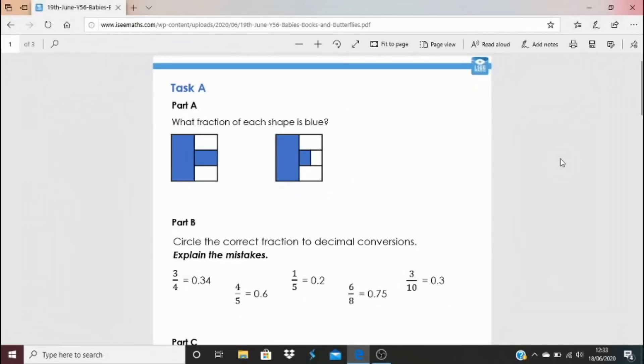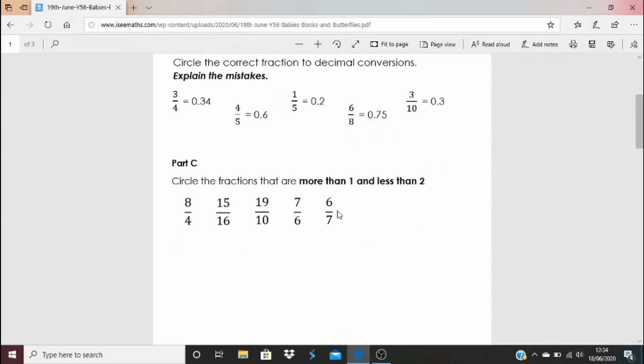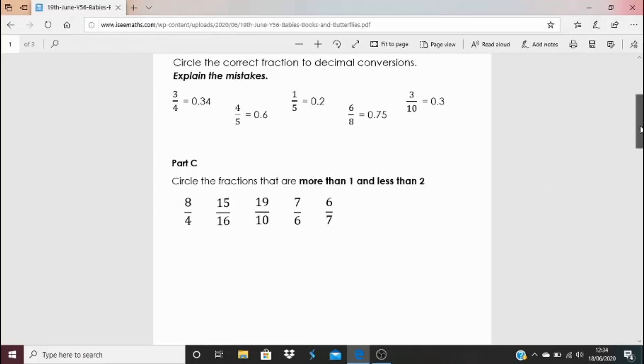So here we are. That blue link underneath the video. We've got a task A and a task B. A different range of questions around fractions. So the fraction of those shapes, the correct fraction and decimal conversions. Can you explain any of the mistakes that have been made as well in the person's thinking? Why might they think it's that? Then we have circle fractions that are more than 1 and less than 2. So have a think. What makes a fraction more or less than 1? Now I'll give an example of a fraction that is 2. 4 halves is 2. So have a think of these fractions here. Which ones are more than 1 and less than 2?